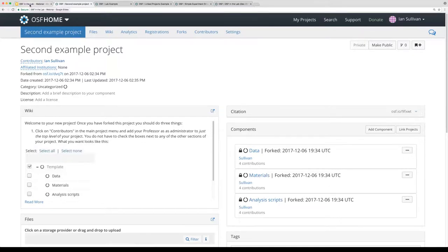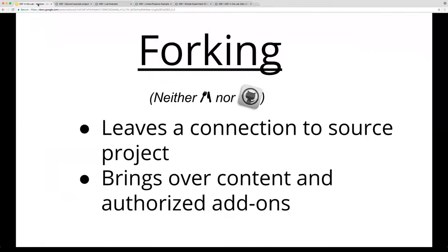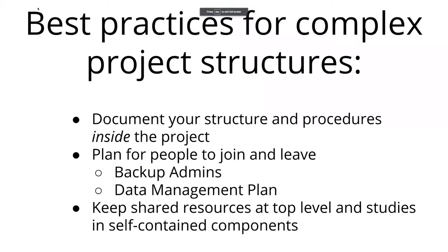Any questions about forking and templating and the differences between them, or scenarios where you may want to use one versus the other? So, just a couple of basic best practices for complex project structures. The first one is: document your structure and procedures, and do that inside the project.